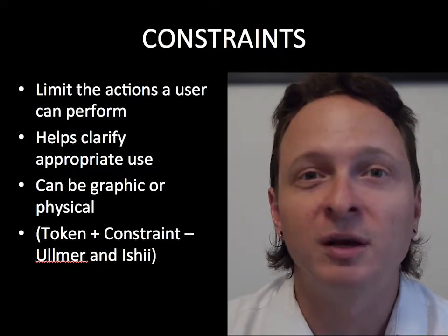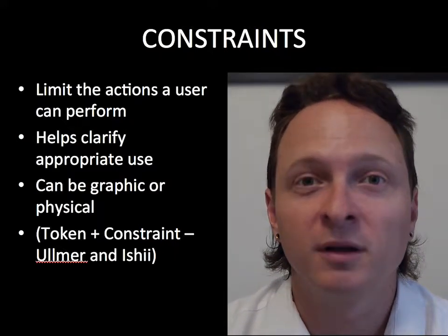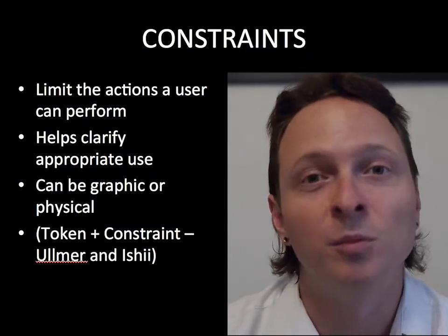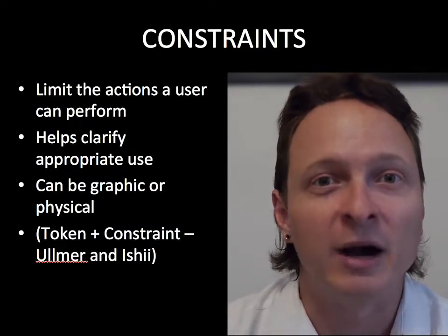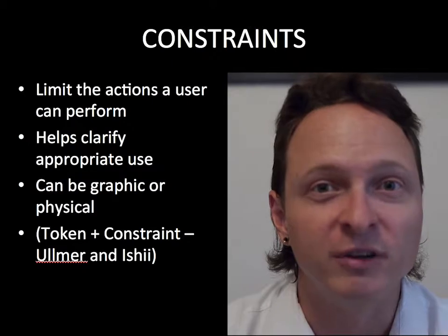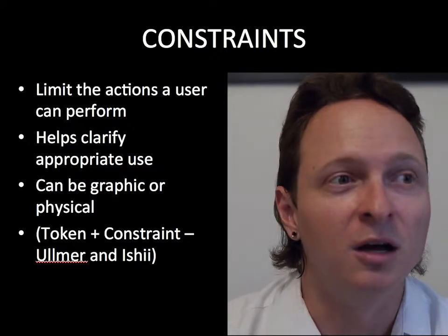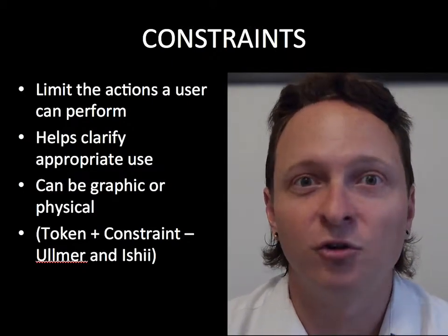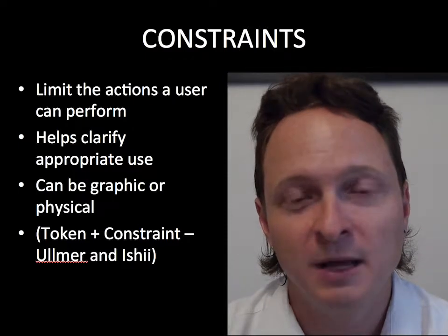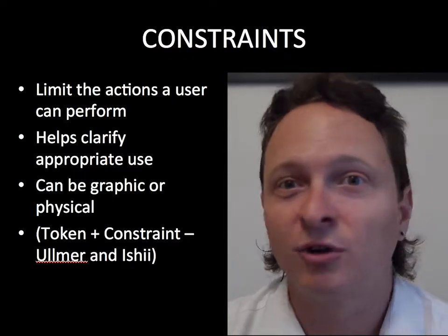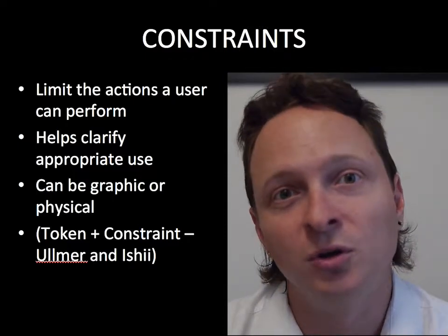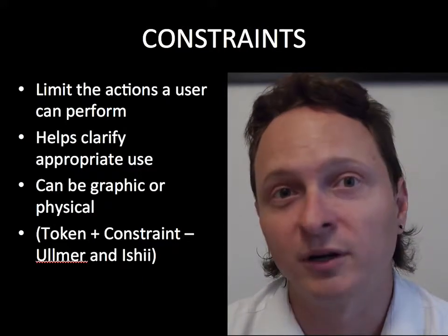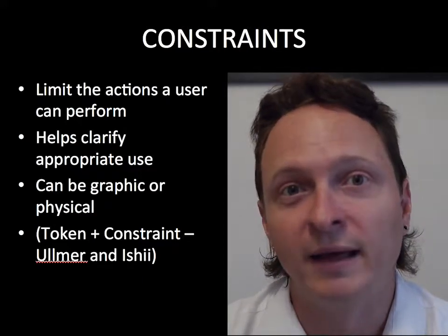Another good example is the child's toy. It has all the different shapes — wooden blocks: a triangle, a cylinder, a sphere, a cube — and then there's a large box with holes for all these different shapes. But only the triangle will fit in the triangle hole, and only the cube will fit in the cube one. Those are physical constraints on that system.